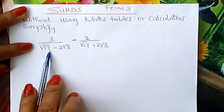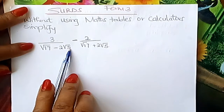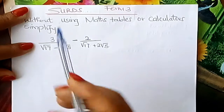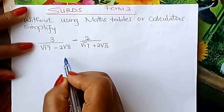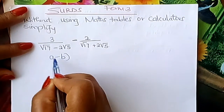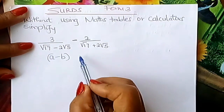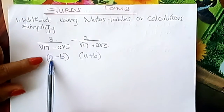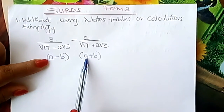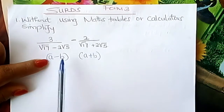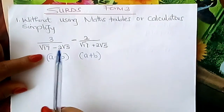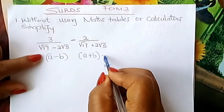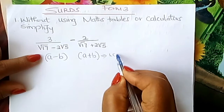Here you have root 17 minus 2 root 5 and root 17 plus 2 root 5 as the denominators. If your denominators are of this kind — look at this — a minus b and here a plus b. If you have a minus b in one denominator and a plus b in the other, the best approach is to first get the LCM.